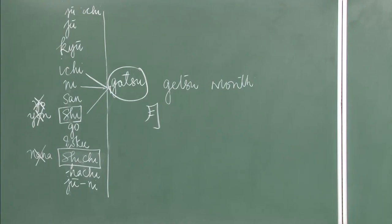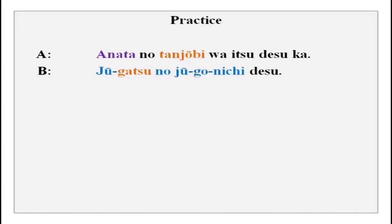Now we go back to our exercise. Anata no tanjoubi wa itsu desu ka? You know anata, tanjoubi is birthday, wa itsu means when, desu ka. Juu gatsu — October — juu gatsu no juu go nichi desu. The nichi part you have done in previous lessons. Juu go nichi is the 15th. So juu gatsu juu go nichi desu means 15th of October.